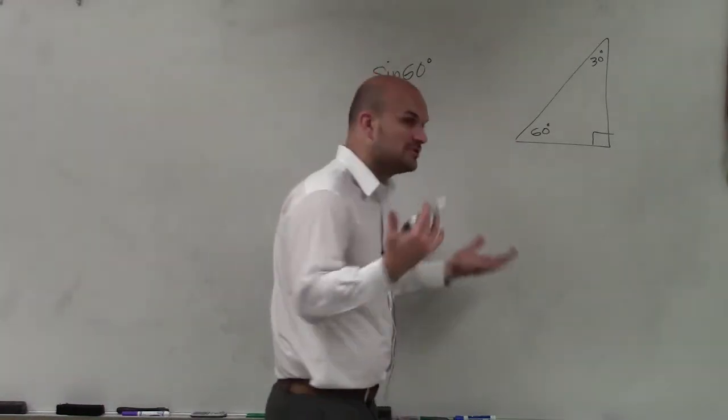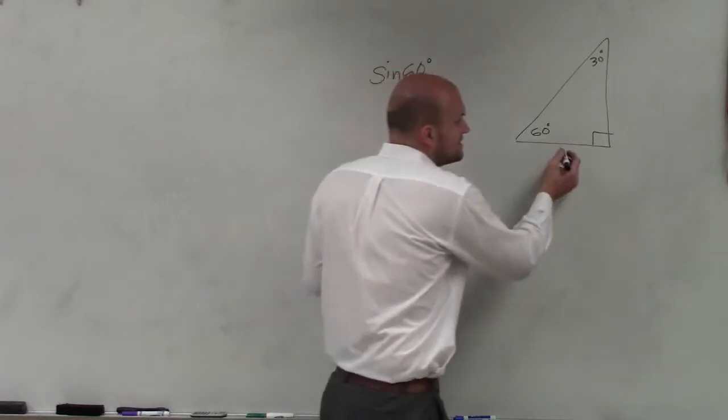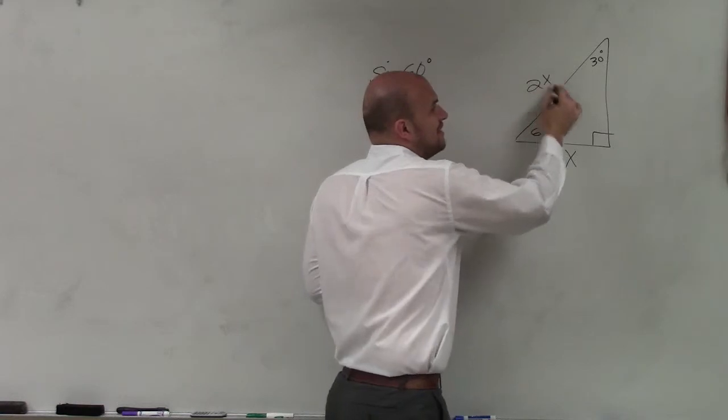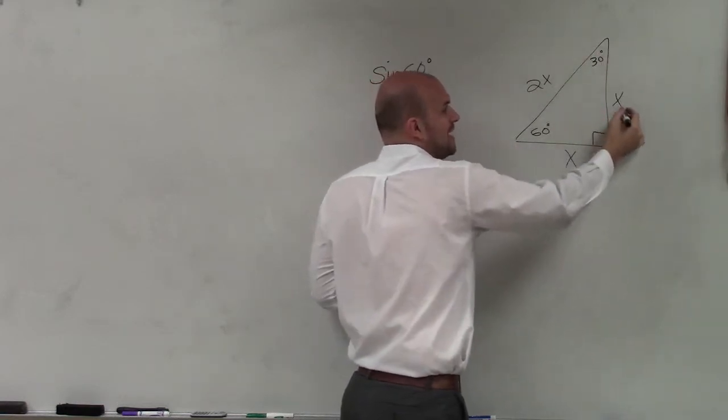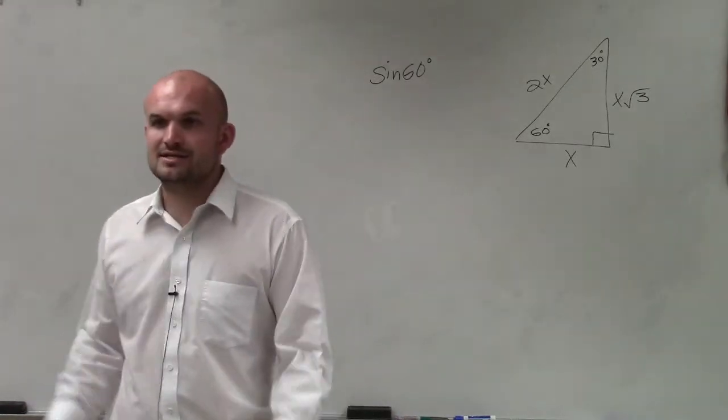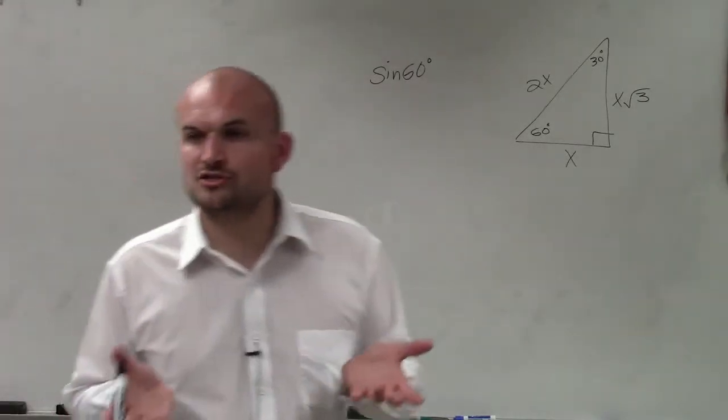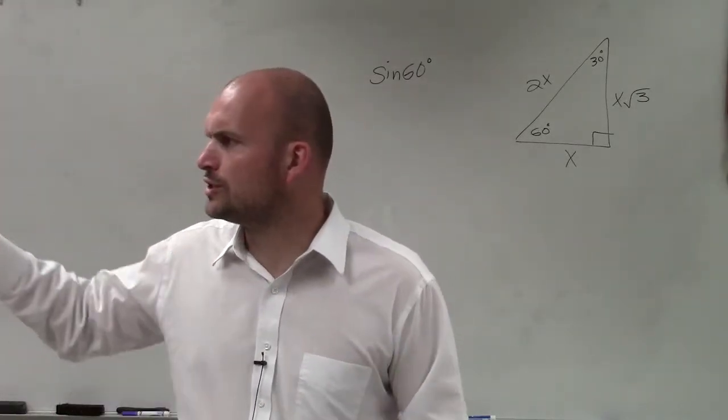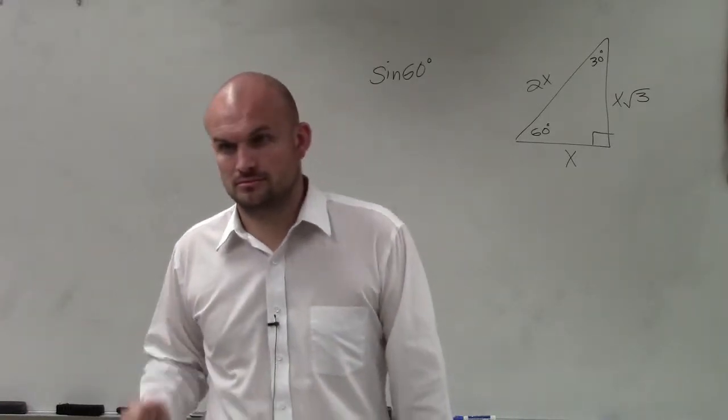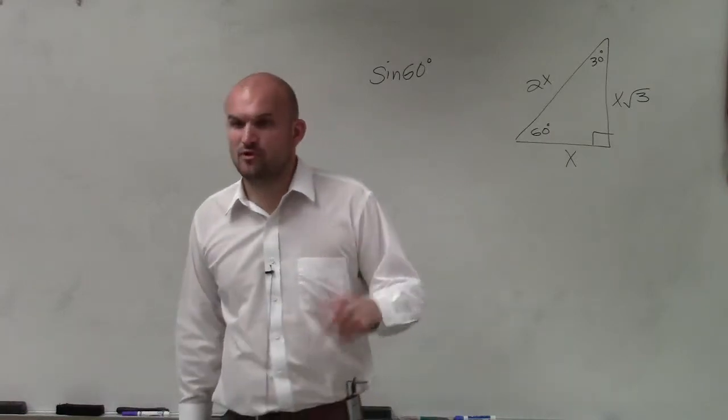So if you guys remember the relationship here, if this is x, my hypotenuse was 2x, and my long leg is x square root of 3. That is the relationship of your special triangles, which we went over two class periods ago.